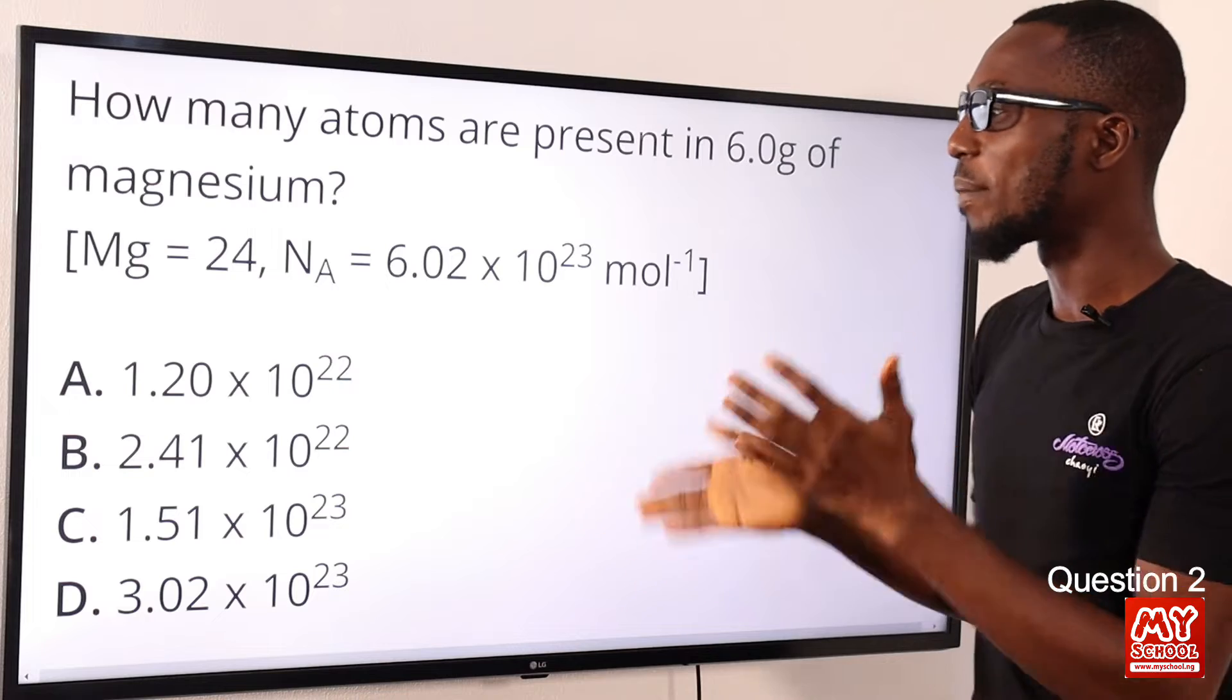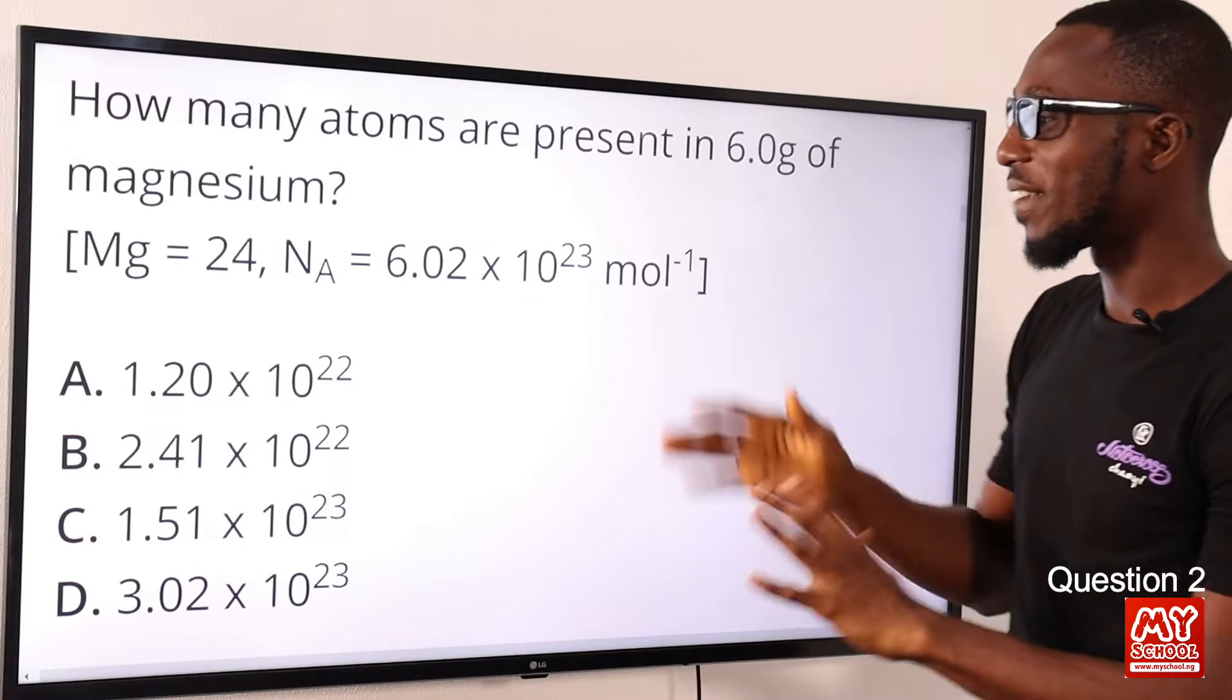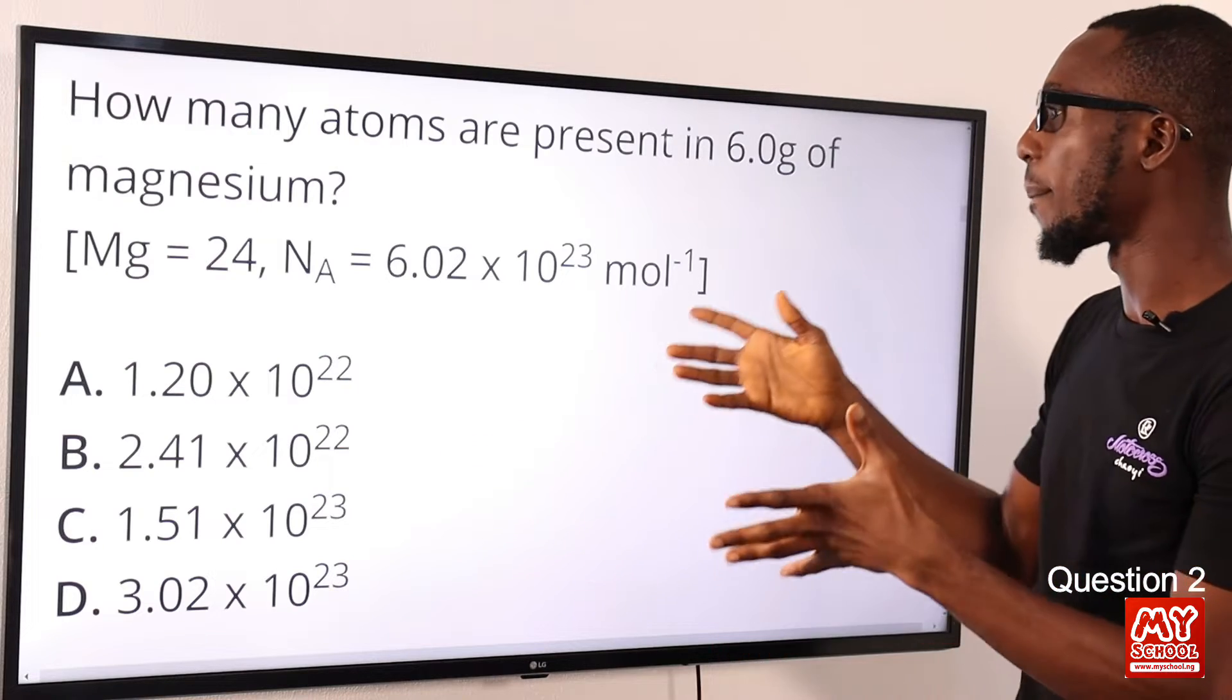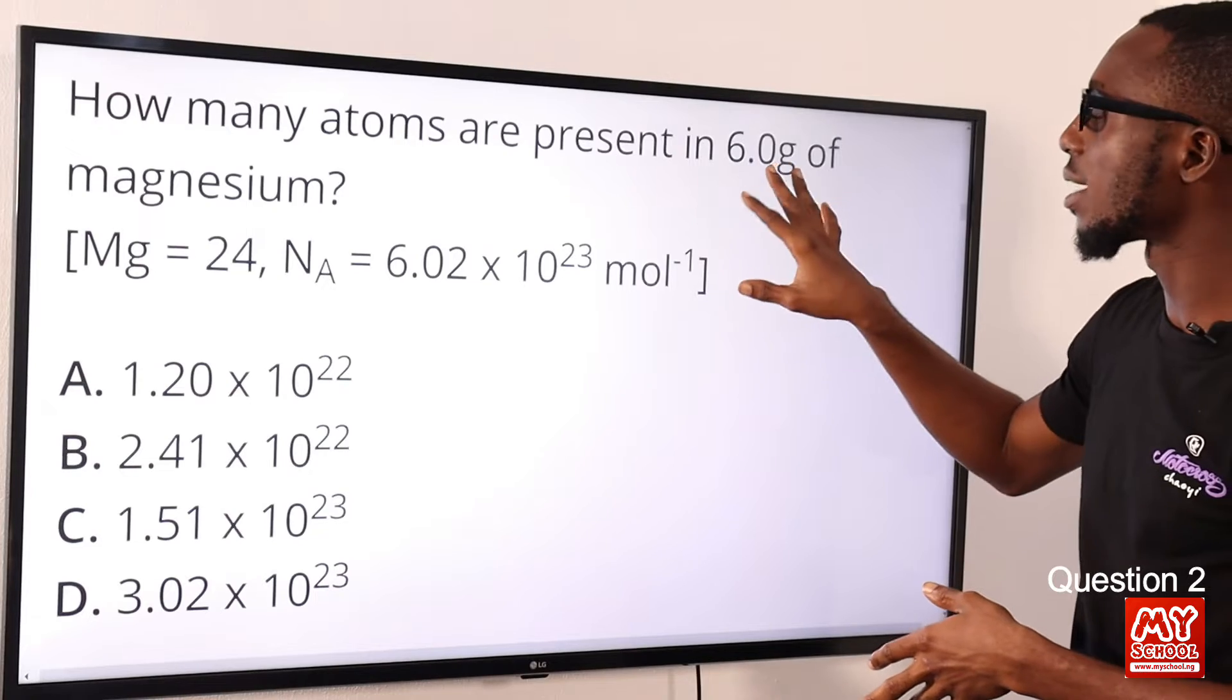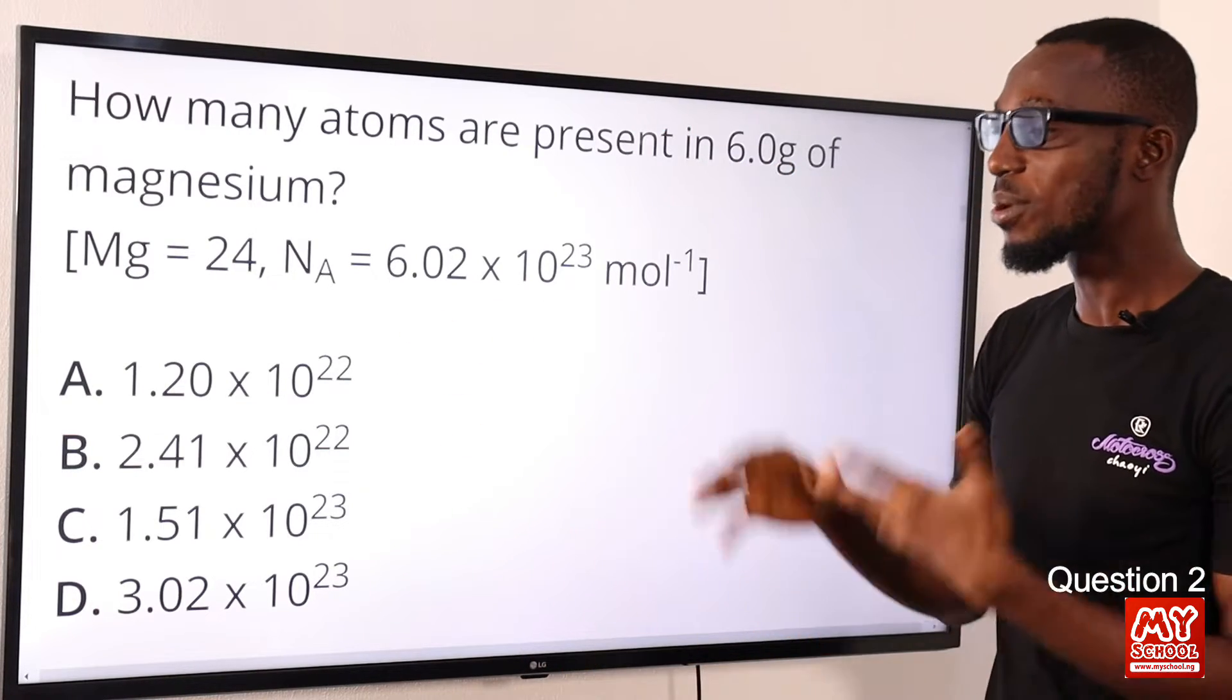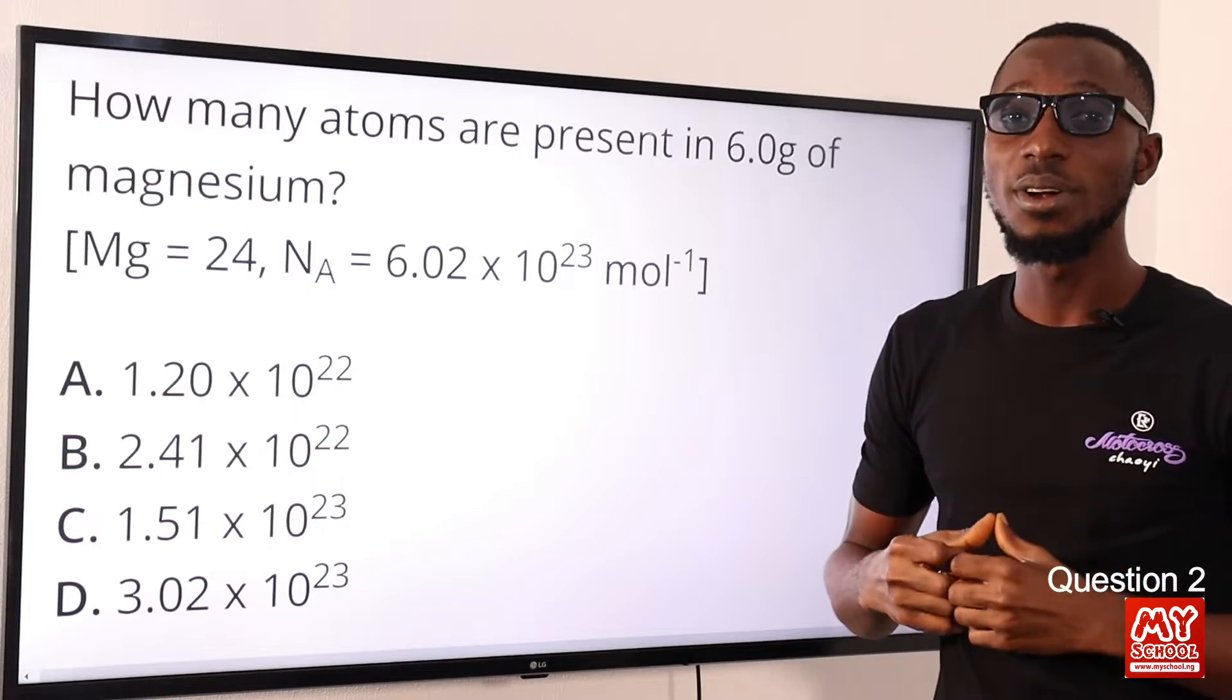That means if we are putting back the decimal points we are looking at 1.5 something. If I look through the options provided, option C is the correct option. You can also say that Mg of 24 equals to this, therefore 6 grams equals to x, then you cross multiply. Option C: 1.51 × 10²³ is the correct option.